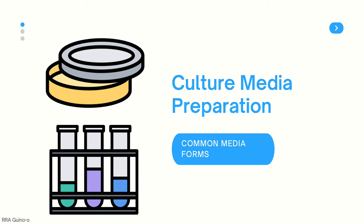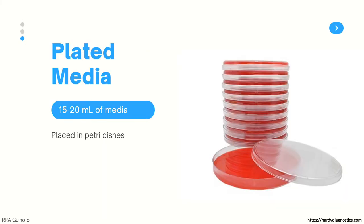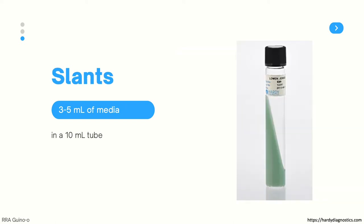Let's now move on to culture media preparation. Culture media can come in many forms, so the first step is establishing what form you are going to create and how much media you need for each one. The first type is plated media, which is usually the most common type found in the laboratory. They are placed in petri dishes, each containing about 15 to 20 ml of media. Then we have slants, like the one you see on the right side, and these contain 3 to 5 ml of media in a 10 ml test tube.